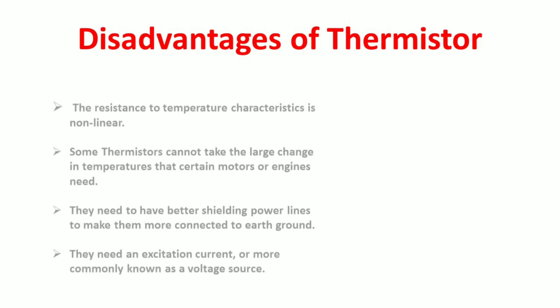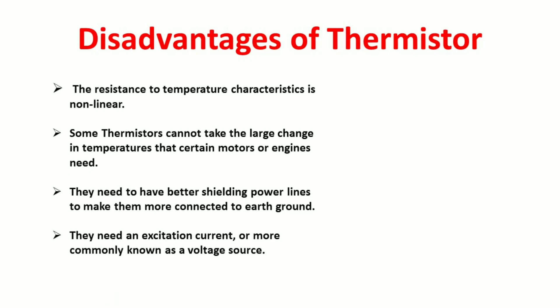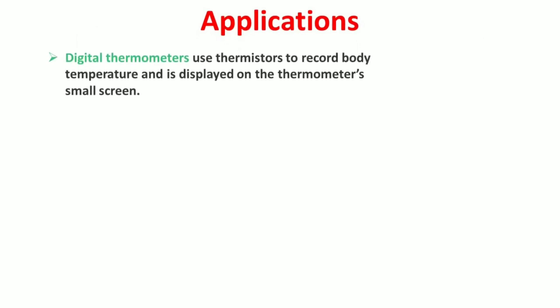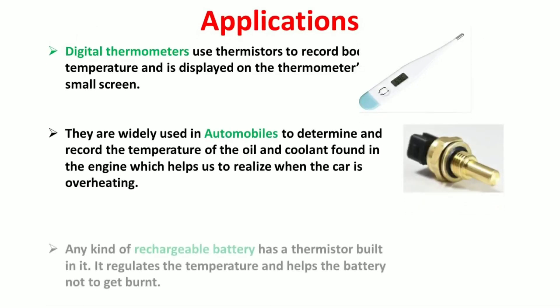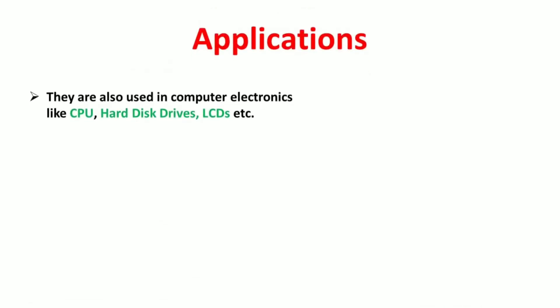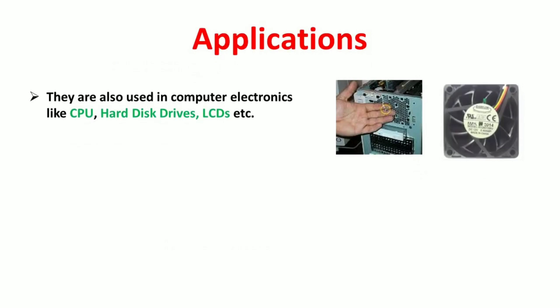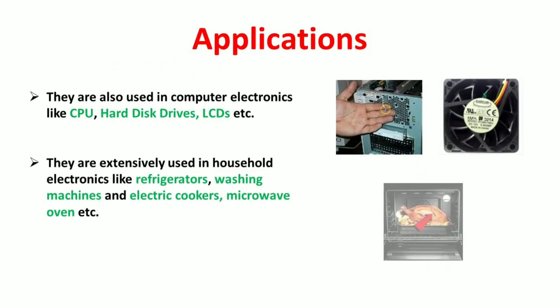The main disadvantage of thermistor is that the resistance temperature characteristics is non-linear. Also, they can't take large change in temperature. Moving on to the application part, they are used in digital thermometers, automobiles, CPUs, hard disk, refrigerators, washing machine, microwave oven, and many more appliances.